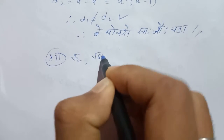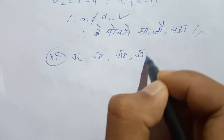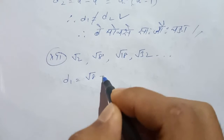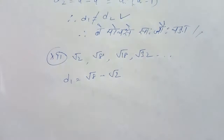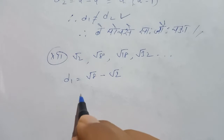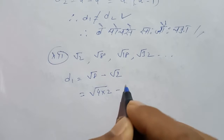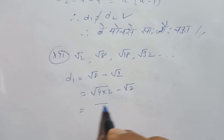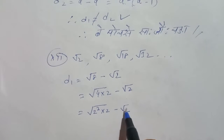The 12th number. The sequence is: √2, √8, 18, and 30. D1 is the first common difference: √8 minus √2. The second common difference: 4√2.